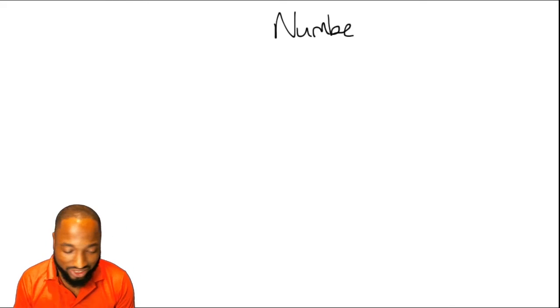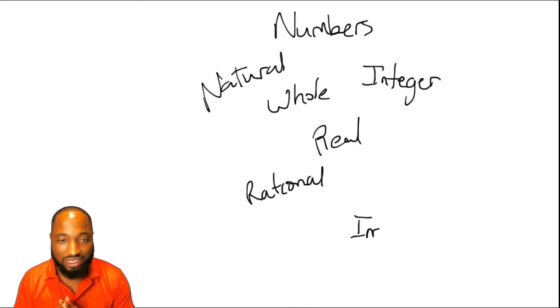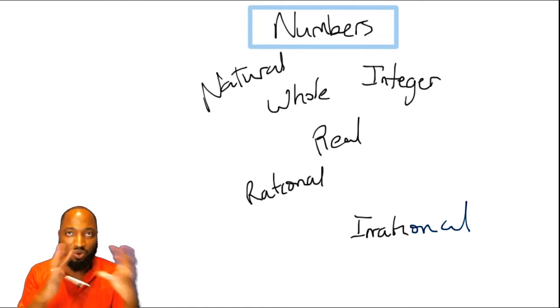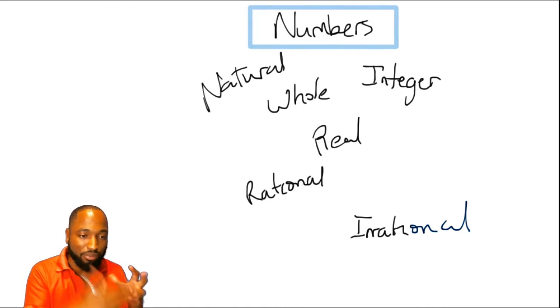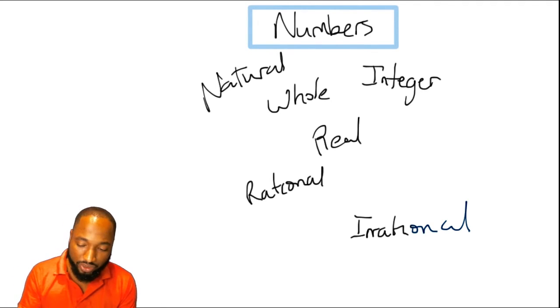So one of the things that we do is put all the numbers that we learn—the natural numbers, whole numbers, integers, real, rational numbers—in a Venn diagram. We order it and say this is a subset of this is a subset of this. Let me show you how it's done very quickly in this short video.